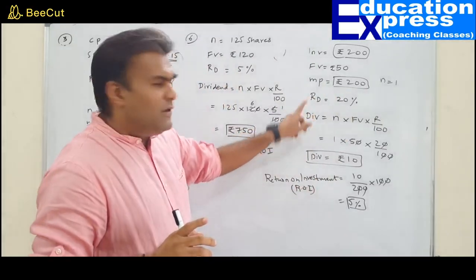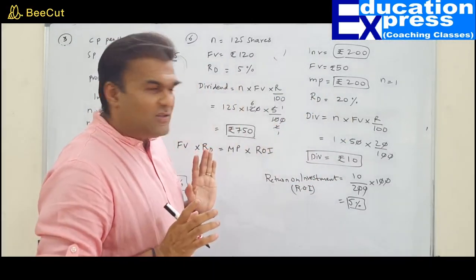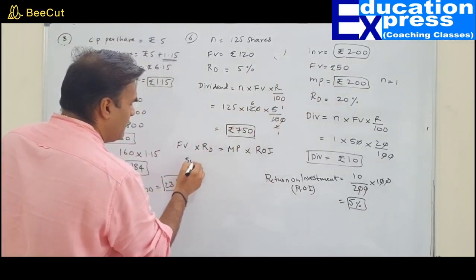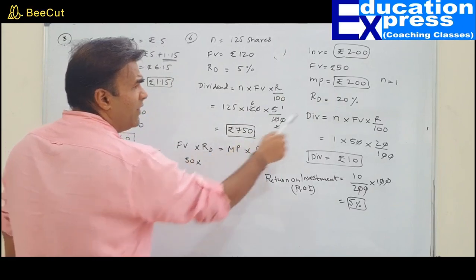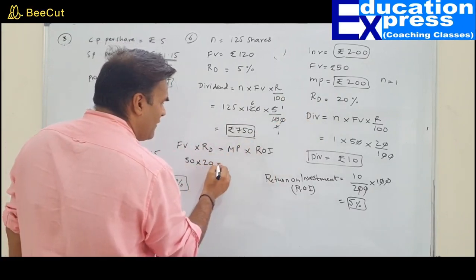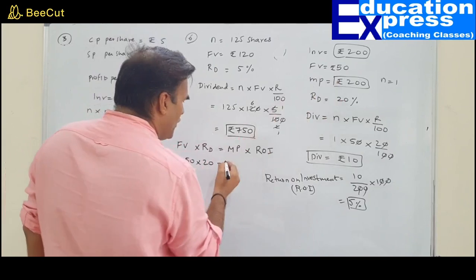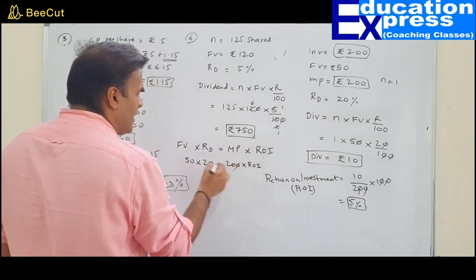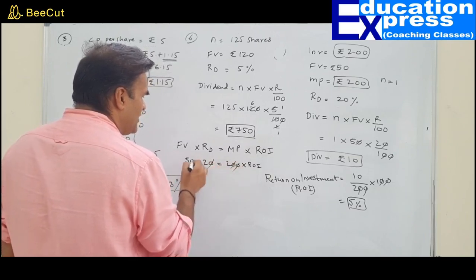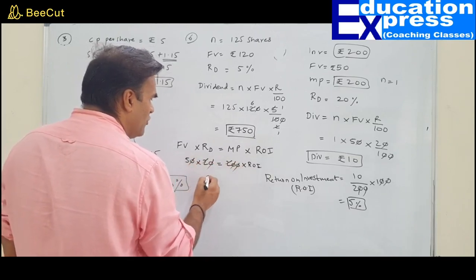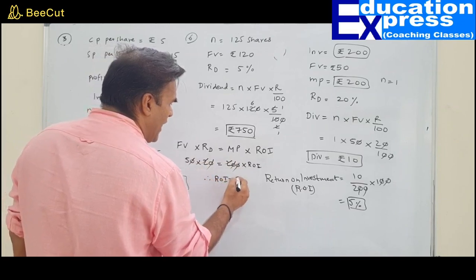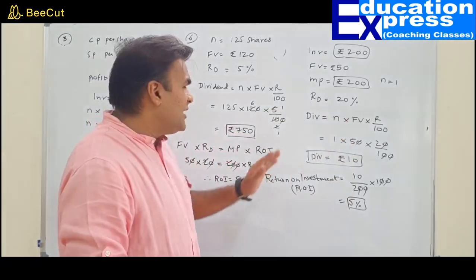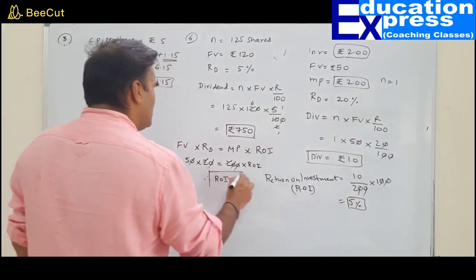Applying the formula to Pankaj's example: face value = 50, rate of dividend = 20, market price = 200. ROI = (50 × 20) ÷ 200 = 1000 ÷ 200 = 5%. No need for lengthy calculations — directly substitute into the formula face value × rate of dividend = market price × ROI to get the answer.